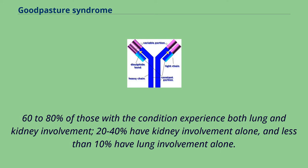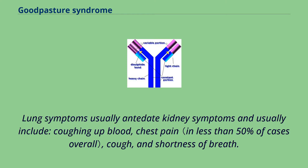60-80% of those with the condition experience both lung and kidney involvement, 20-40% have kidney involvement alone, and less than 10% have lung involvement alone. Lung symptoms usually antedate kidney symptoms and usually include coughing up blood, chest pain, cough, and shortness of breath.